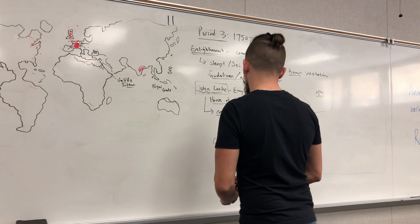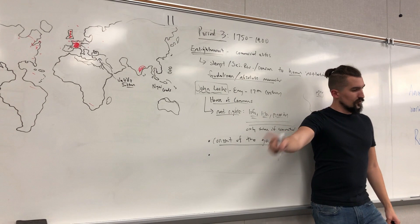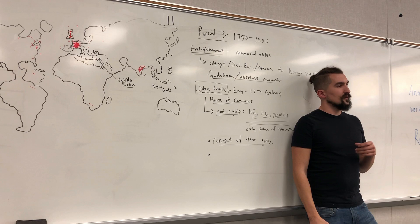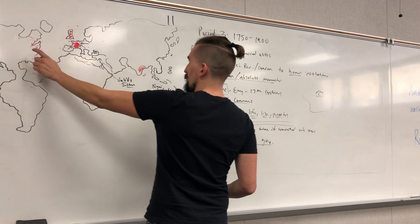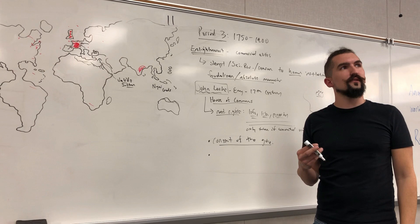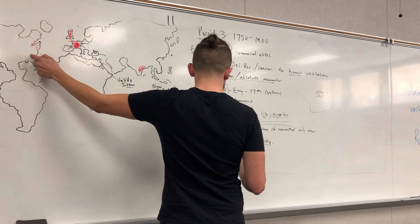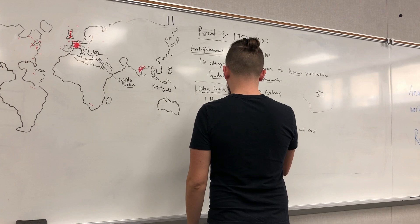Locke also helped develop the concept of limiting government via a written document — constitutionalism. That already started in England with the Magna Carta, but after the English Revolution they created an English Bill of Rights, a much more formalized constitution. Locke even wrote constitutions for colonies in the United States — he wrote the constitution for one of the Carolinas. Constitutionalism means a formal set of rules that the ruler must follow.